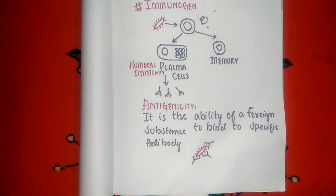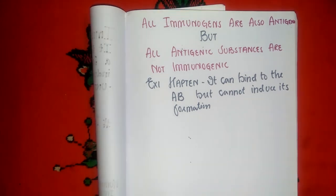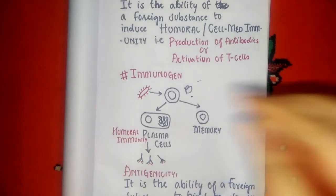So we understand that antigenicity is simply the ability of a foreign substance to bind to an antibody, while immunogenicity is the ability to induce the formation of antibodies. Now this is important to remember: all immunogens are also antigenic, but all antigenic substances are not necessarily immunogenic.